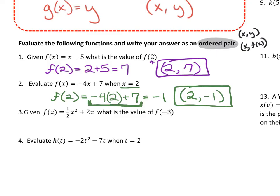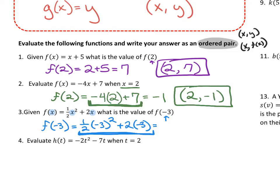Number three: given f of x equal to one half x squared plus 2x, what is the value of f of negative 3? I plug in negative 3 for every x in the function. So f of negative 3 equals one half times (−3) squared plus 2 times (−3). There's a second x in the formula, so I replace it again — every x gets replaced with the evaluation number. Following PEMDAS, this gives us negative 3 halves, so the coordinate is (−3, −3/2).